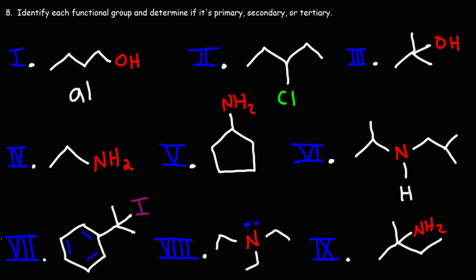This is an alcohol. What type of alcohol are we dealing with — primary, secondary, or tertiary? For alcohols, it depends on which carbon the OH group is bonded to. The hydroxyl group is bonded to this carbon atom. This carbon is attached to one other carbon atom, so that is a primary carbon atom, which makes this a primary alcohol.